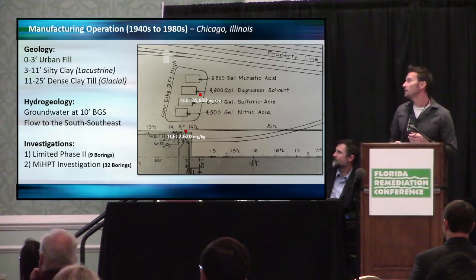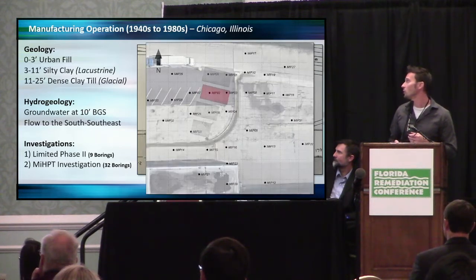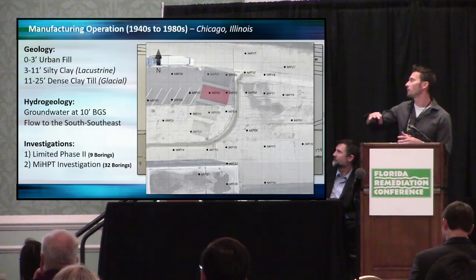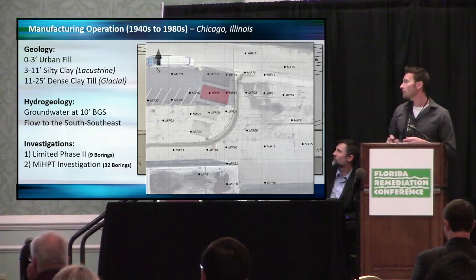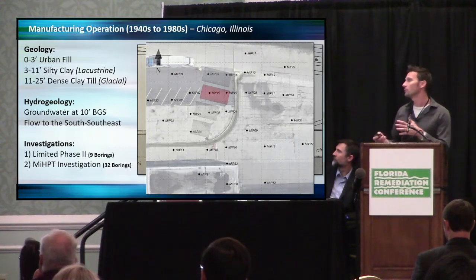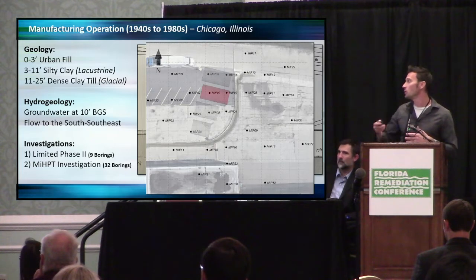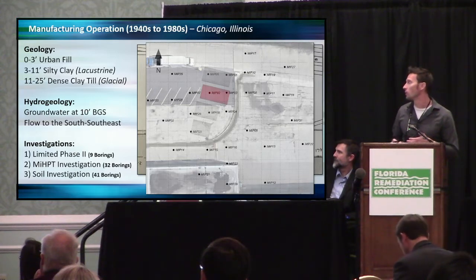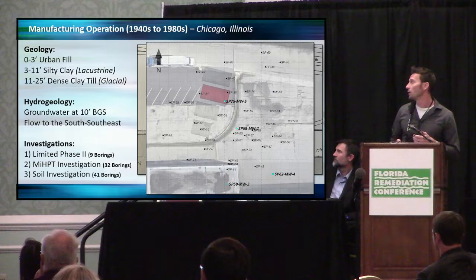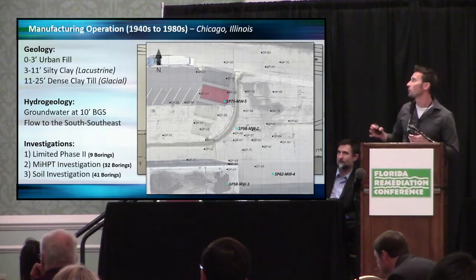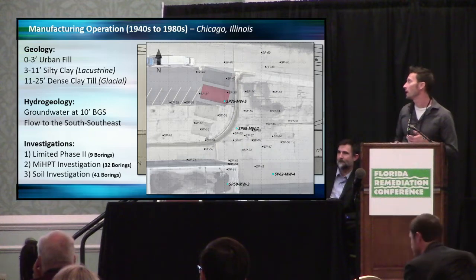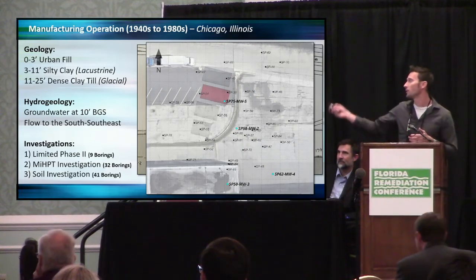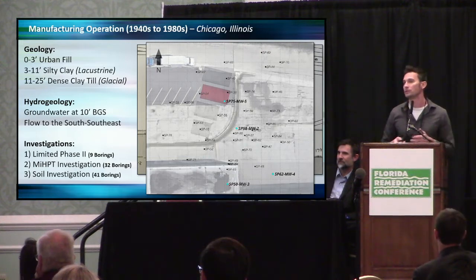Next, we performed a MIHPT — a Membrane Interface Probe Hydraulic Profiling Tool investigation — at 32 points. From aerial photography, we found that those tanks are actually oriented slightly angled, with the TCE tank shown in red. After the MIP investigation, where we figured out the limits of the contamination, we performed a soil investigation to get actual analytical concentrations — 41 additional borings and five monitoring wells. The 32 MIP borings produced tens of thousands of data points.